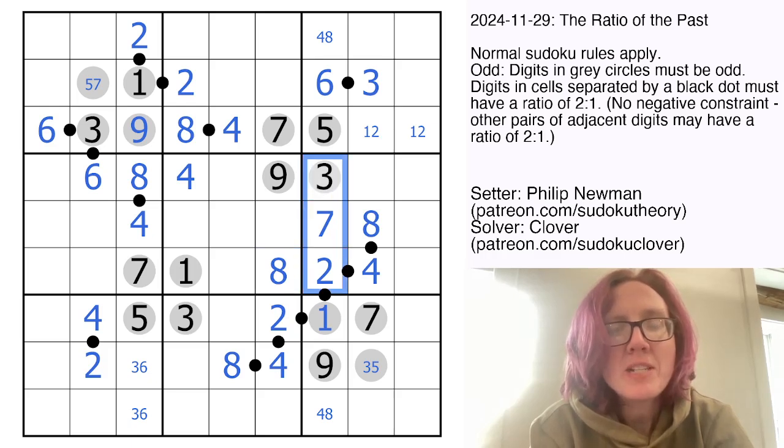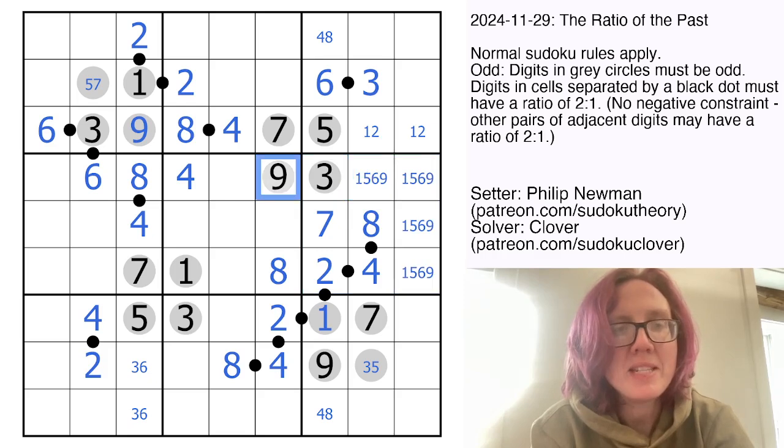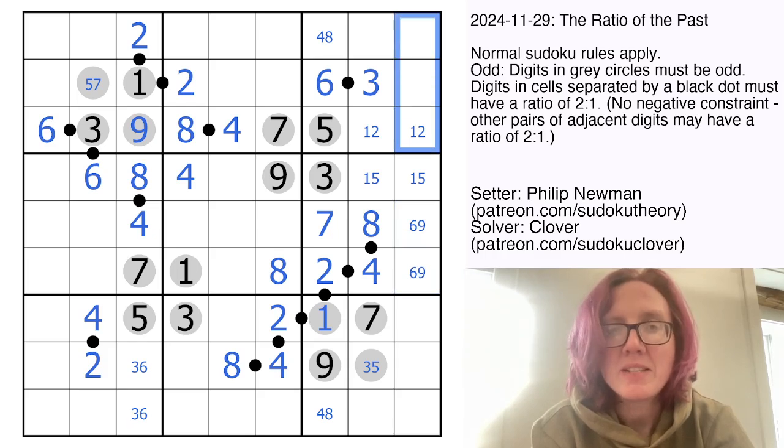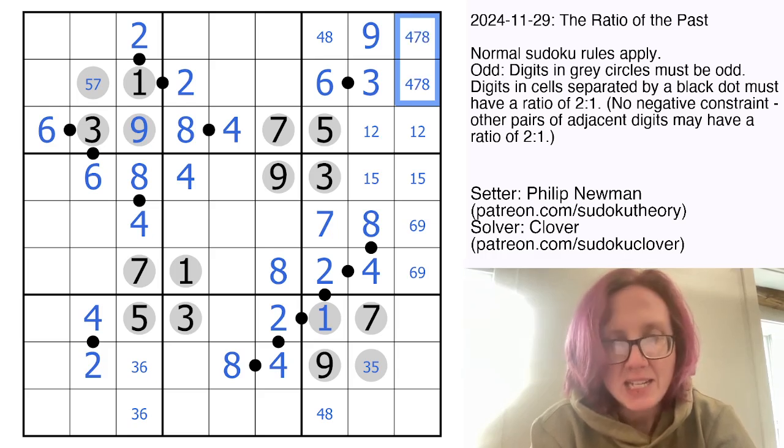This region here, I need four more digits. So I need a 1, a 5, a 6, and a 9. So if I pencil those in, we can see that 6 and 9 already appear in this row. So that's a 1, 5 pair, and that makes this a 6, 9 pair. So 9, therefore, can't be in any of these cells. So 9 in this region must be there. And these are going to be 4, 7, and 8.